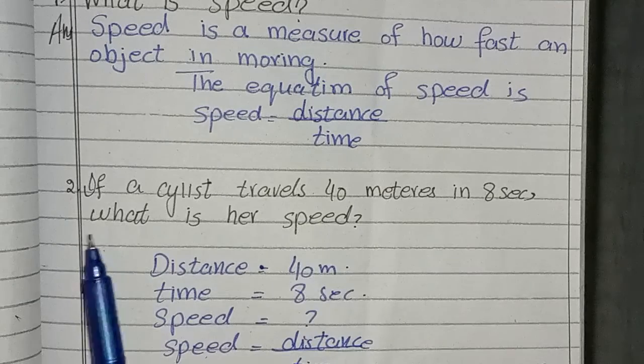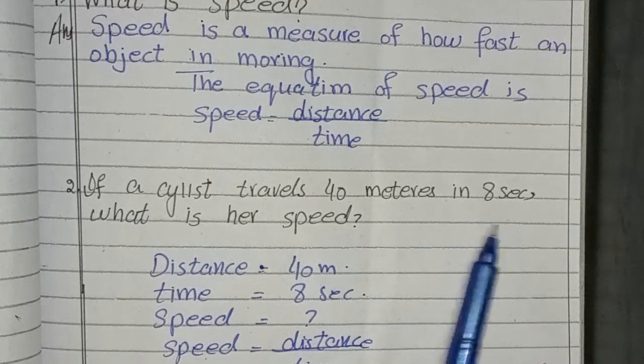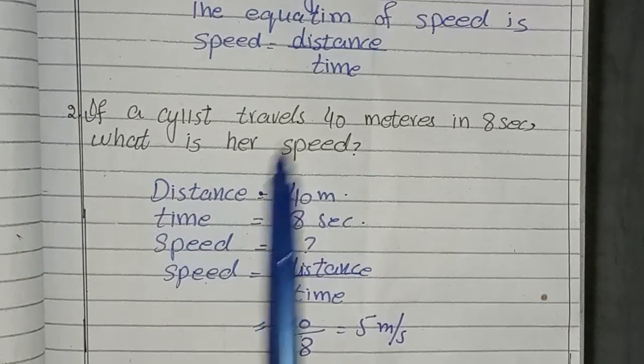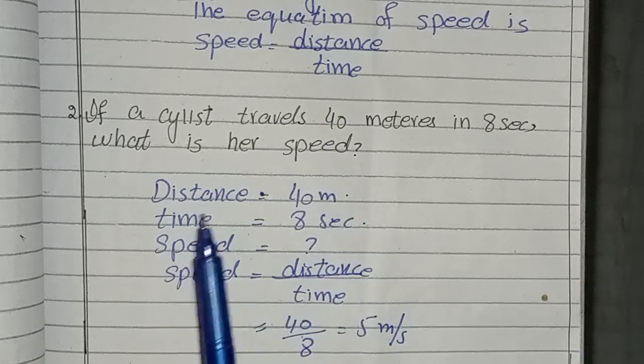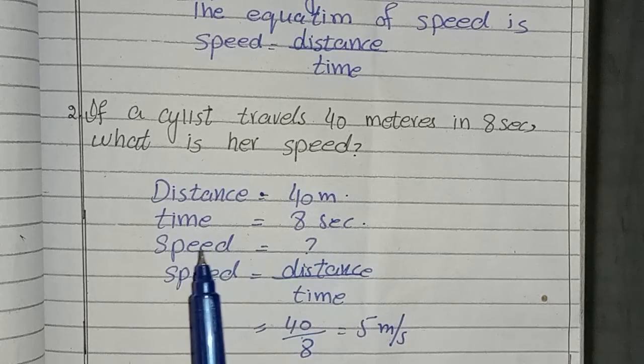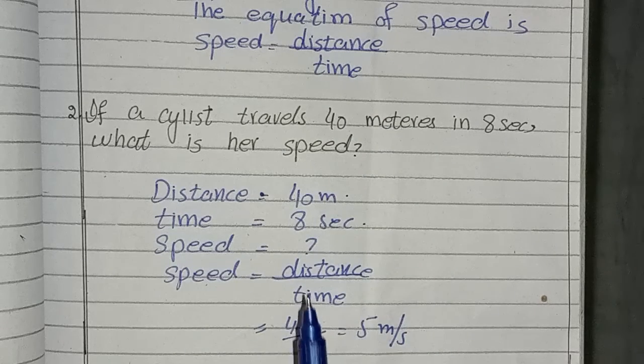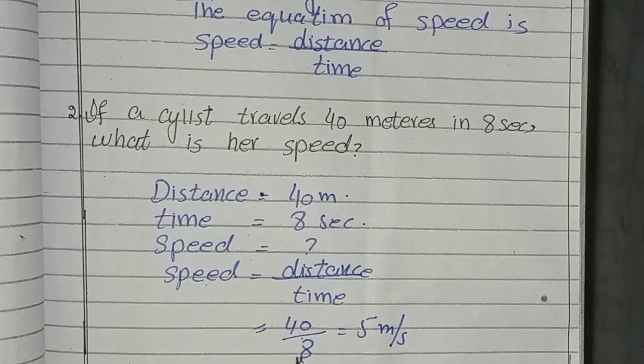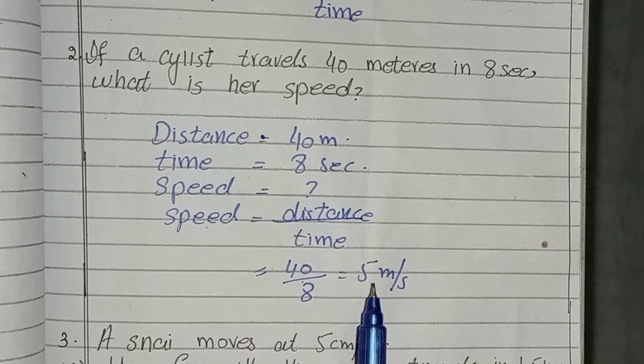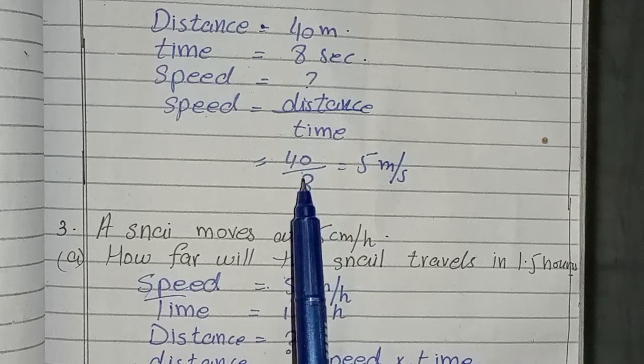Second question is: if a cyclist travels 40 meter in 8 seconds, what is her speed? You have to write 5. Because the formula and equation is given, distance is 40 meter, time is 8 seconds, speed is not known. Now you have to write equation, then you have to put it here: distant is 40, time is 8, cutting. After the answer is 5 meter per second. If it is cutting, then divide.